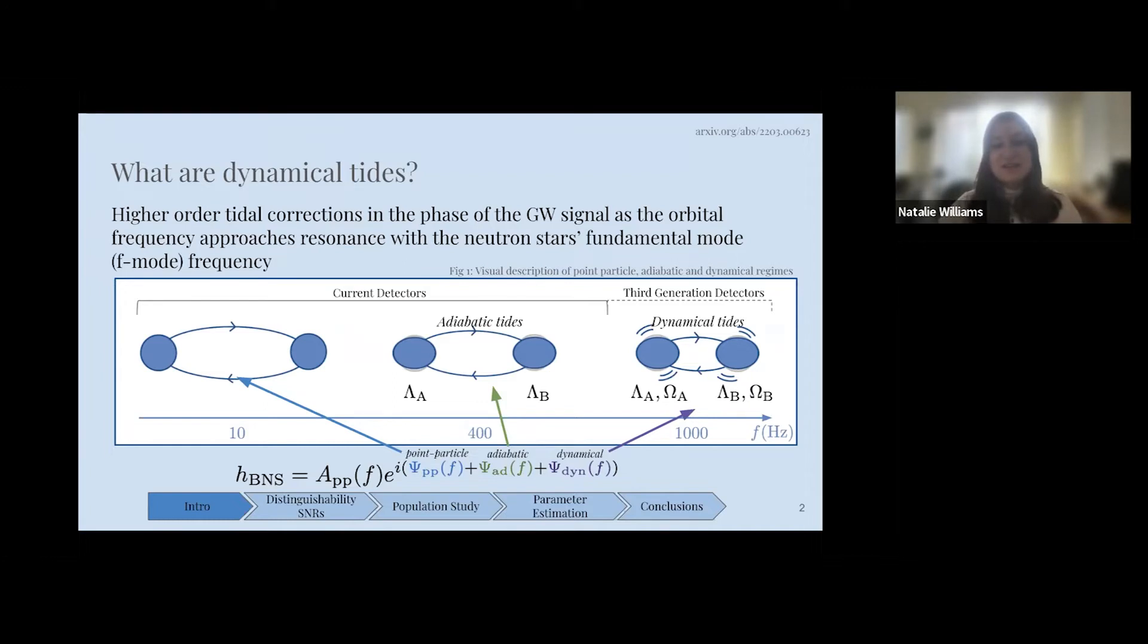These lambda values are dependent on the currently unknown neutron star equation of state, and we were able to constrain these for the very first time with GW170817.